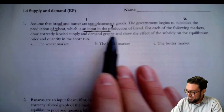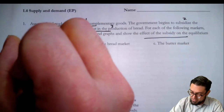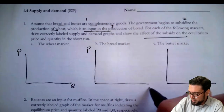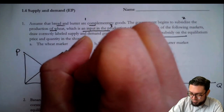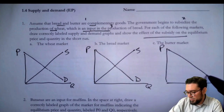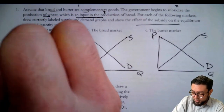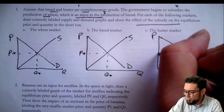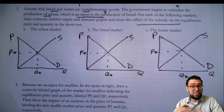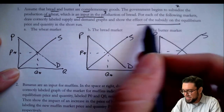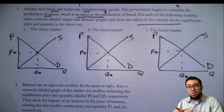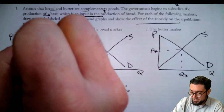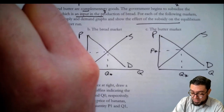For each of the following markets — wheat, bread, butter — draw, label, and show the effect of the subsidy on wheat. We'll set up our graphs with price and quantity for each one: P and Q, P and Q, P and Q. Then we draw supply and demand. It's good practice drawing supply and demand graphs. We'll label current price and output as P*, Q*, and use P1, Q1 for the second values so we can compare. A subsidy on wheat means the government pays farmers for every unit of wheat made, which reduces the cost of production and increases the supply. So there's a rightward shift in the supply of wheat, leading to an increase in quantity and a decrease in the price of wheat.